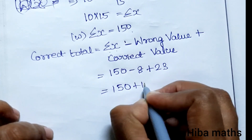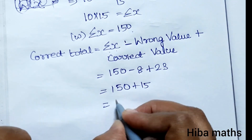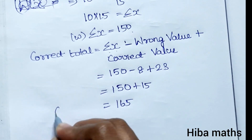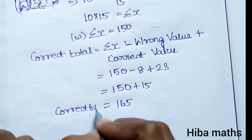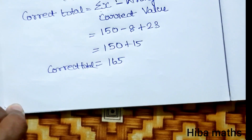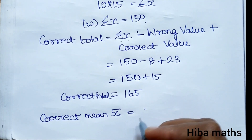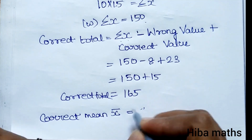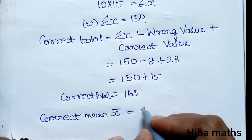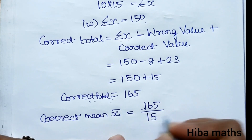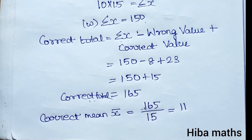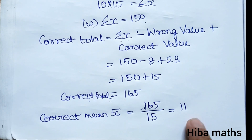So 150 plus 15 equals 165. This is the correct total sum. Now we can calculate the correct mean: correct mean equals correct total divided by number of observations, which is 165 divided by 15, giving us the correct mean equal to 11.